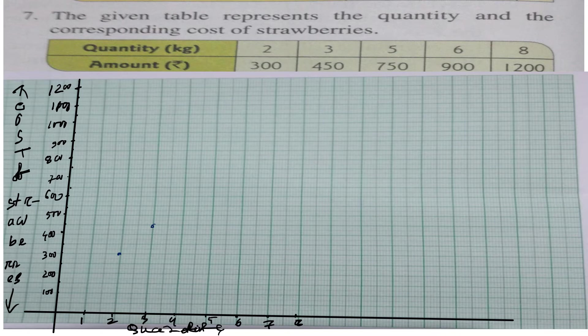Now, 750 — opposite to 5 kg is 750. Go to 750 on the Y-axis: 800 is here, so 750 is between 700 and 800, right here. So this point, opposite to 5 kg, is 750.